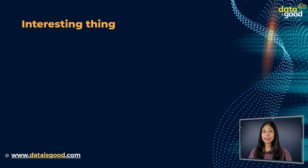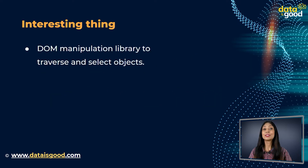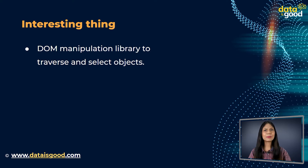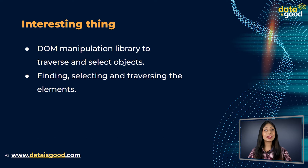One more interesting thing about jQuery is that it uses Document Object Model manipulation — that is, a DOM library — to traverse and select objects. All the elements of a web page are represented in the form of a tree, wherein jQuery syntax is used for finding, selecting, and traversing the elements of the DOM.